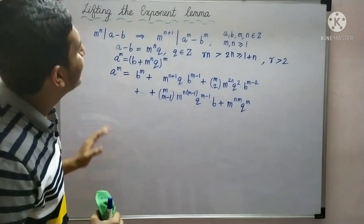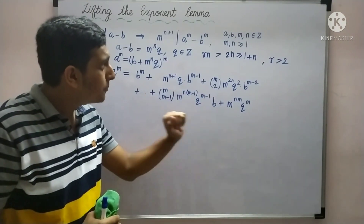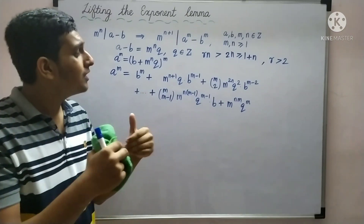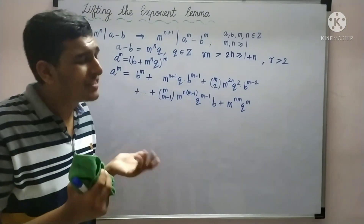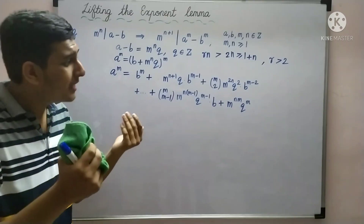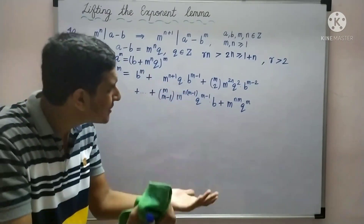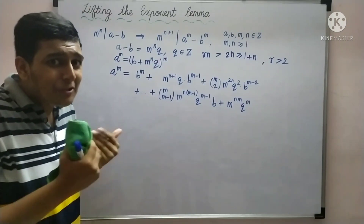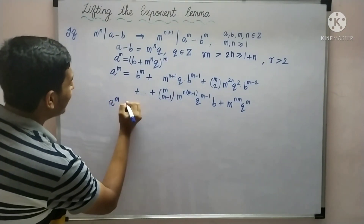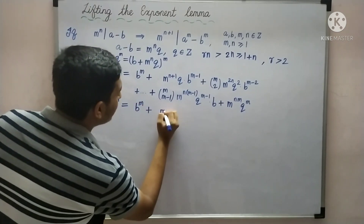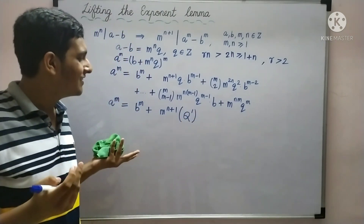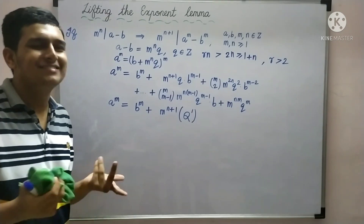Similarly, if we extract 1 plus n factors of m from every subsequent term, it will leave behind m raised to a non-negative exponent using the same logic. This implies that every other term is an integer multiple of m raised to n plus 1, since each of them has more than or equal to n plus 1 factors of m in them. For simplicity, let me rewrite this as m raised to n plus 1 times q-dash, where q-dash is an integer.